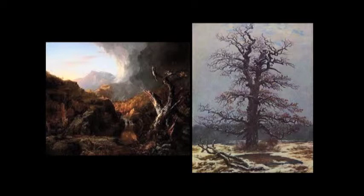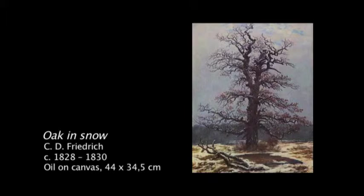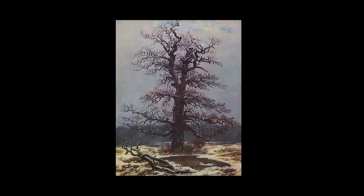Look again at the theme of the tree done by Friedrich — what I was telling you before about the anthropomorphism of it. In this oak in snow, called exactly that, you can see by the branches almost a symbol of all the pain and difficulty the tree has had to survive, but nevertheless it's a big tree — probably there since long, long years. And it shows this mixture of fight against the odds and also triumph of life. The two aspects being together.